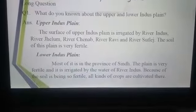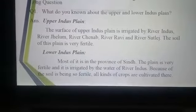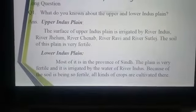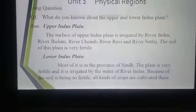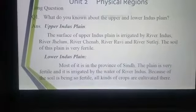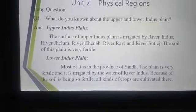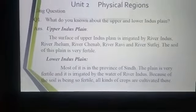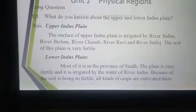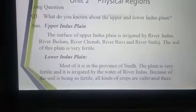The lower Indus plain — most of it is in the province of Sindh. The plain is very fertile and it is irrigated by the water of River Indus. Because the soil is so fertile, all kinds of crops are cultivated here. The main river, River Indus, flows through the lower Indus plain.